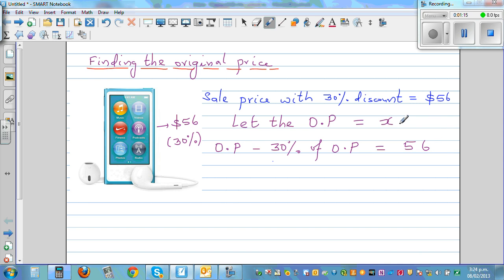So if original price is X, I can say in place of OP, I can write X minus. This is 30% as a decimal is 0.3 of X is equal to 56. So this is 1X minus 0.3X is same as writing 0.3X is equal to 56. What is 1X minus 0.3X? That is 0.7X is equal to 56.